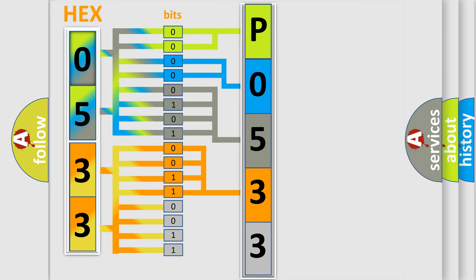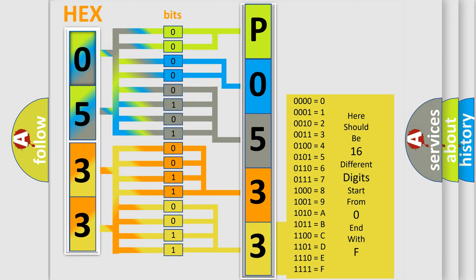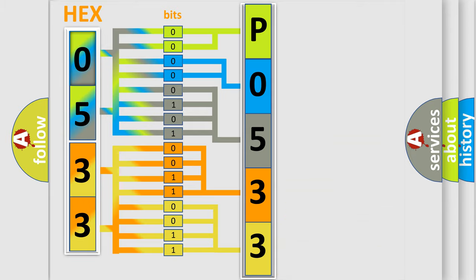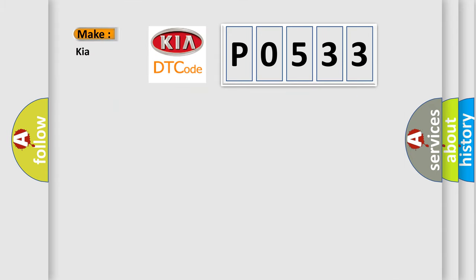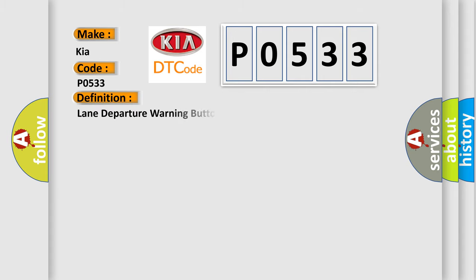A single byte conceals 256 possible combinations. We now know how the diagnostic tool translates received information into a more comprehensible format. The number itself does not make sense if we cannot assign information about what it actually expresses. So, what does the Diagnostic Trouble Code P0533 interpret specifically for KIA car manufacturers? The basic definition is: Lane Departure Warning Button Circuit Open.